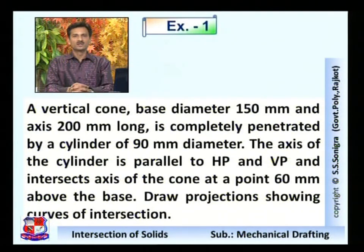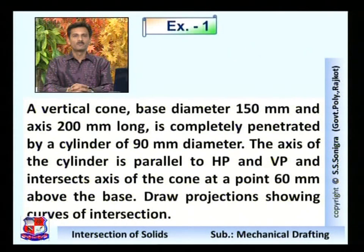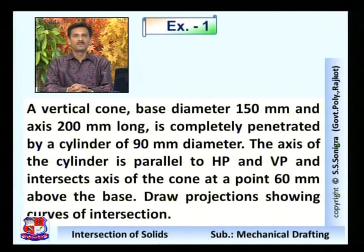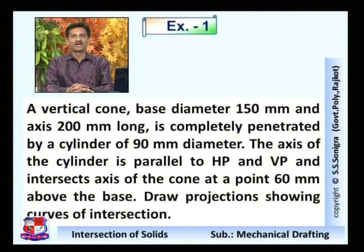In this kind of problem, we first consider the standing solid. Here the standing solid is a vertical cone resting on its circular base, so first we draw the cone's top view, front view, and side view. In the second step, the penetrating solid is a cylinder having diameter 90 mm and undefined length. We draw this penetrating solid in the side view of the cone, then find the points of intersection and draw the curve of intersection.